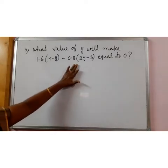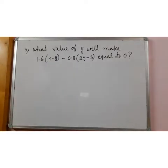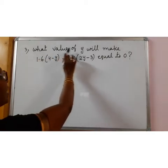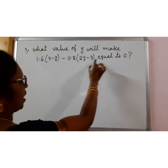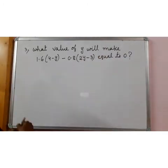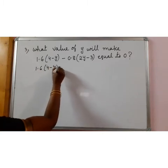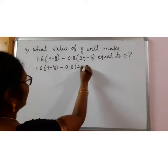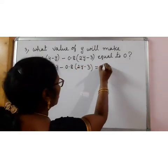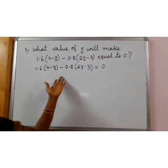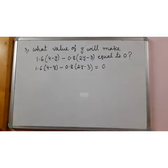It is not at all different from other questions which you have already solved, but different wording is given. The question is, what value of y will make this expression equal to 0? The meaning of this is 1.6 into 4 minus y minus 0.8 into 2y minus 3 is equal to 0 for what value of y? That means the value of y we have to find out. Now this one only I have written the form of equation and we have to find the value of y. Just little differently it is given.